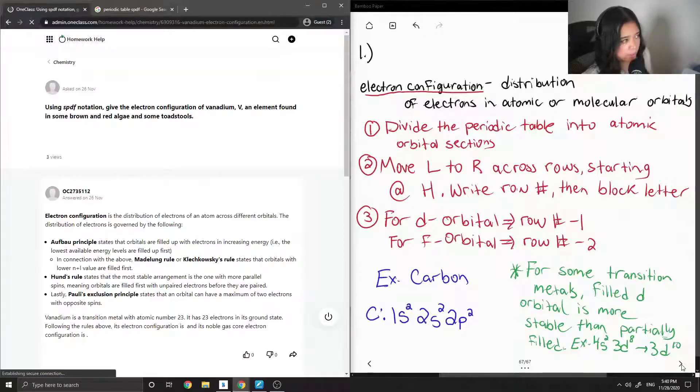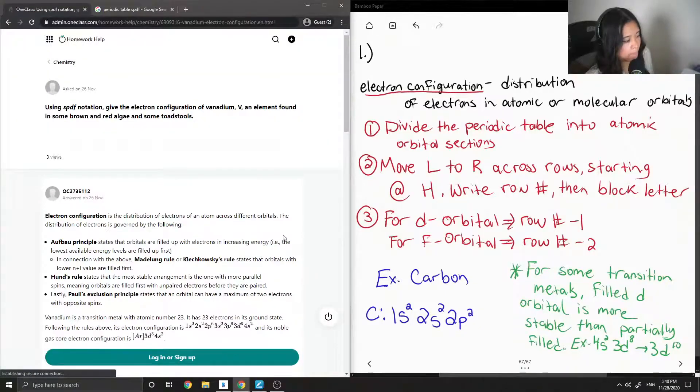Now let's move on to question number two. Using SPDF notation, give the electron configuration for vanadium, which is an element found in some brown and red algae and some toadstools.